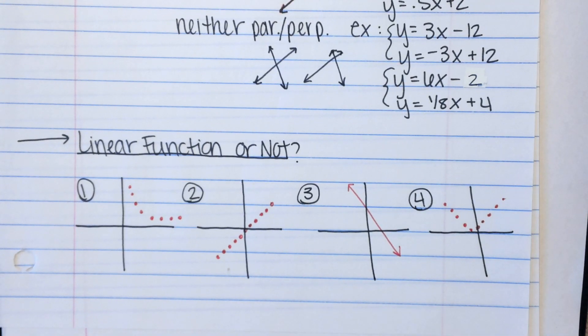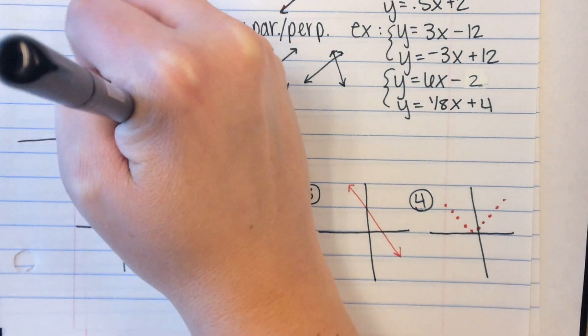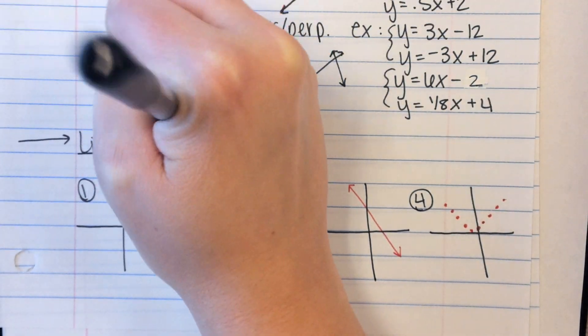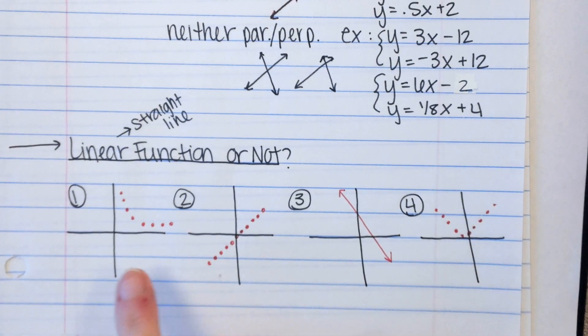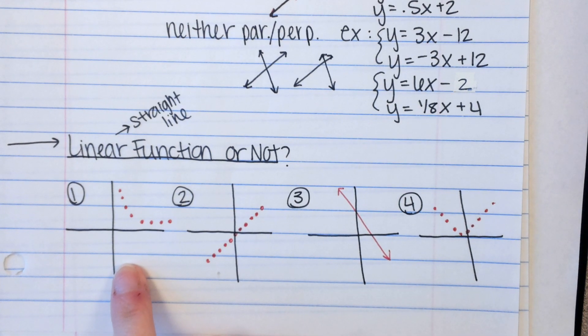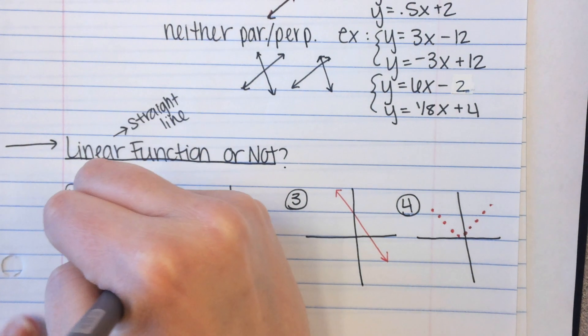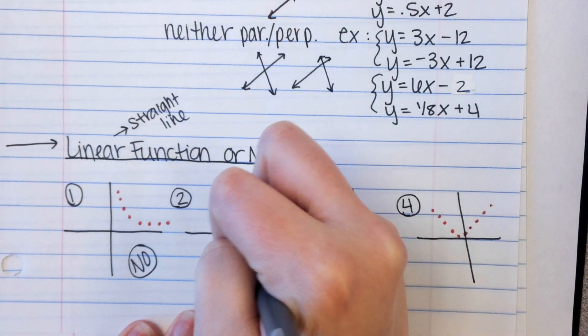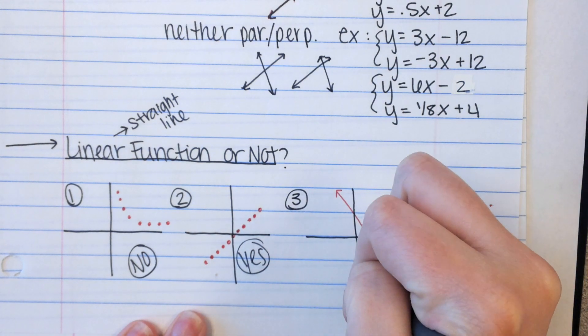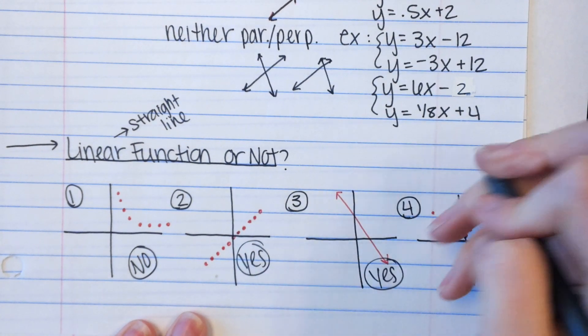Okay. The last thing we're going to look at is deciding if a graph is a linear function or not. So the word linear implies the word line, right? So for it to be a linear function, it has to be a straight line. So we're just going to look at the graphs and say yes or no. So number one, do you think that's a linear function? No. It's got a curve. What about number two? Yes. Number three? Yes. And number four? No.